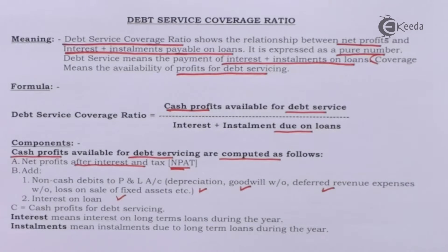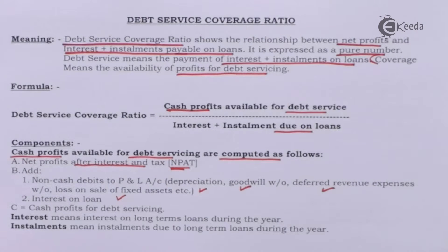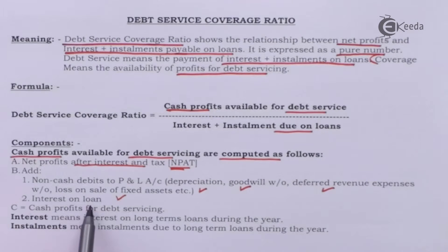The profit shown in the profit and loss account is arrived at after debiting non-cash items like depreciation and goodwill written off. For payment of loan installment, we are interested in cash flows, so we add all non-cash items back to net profit to find the cash net profit of the business. The second item is interest on loan.